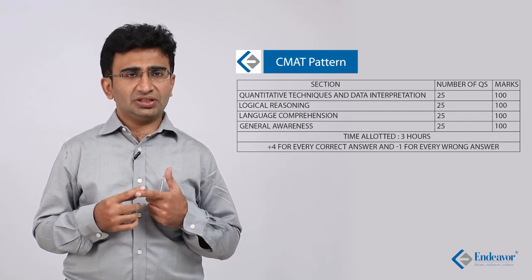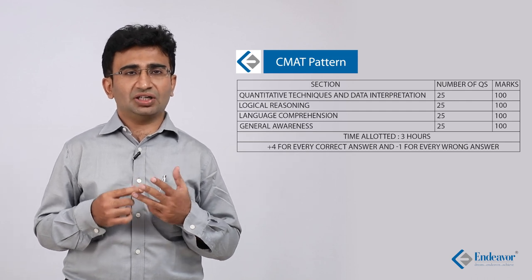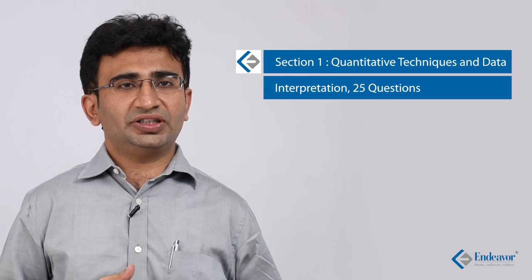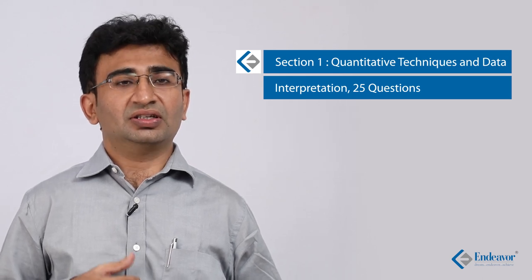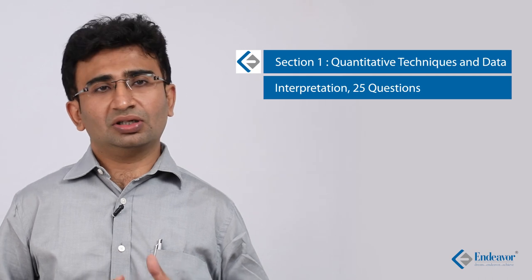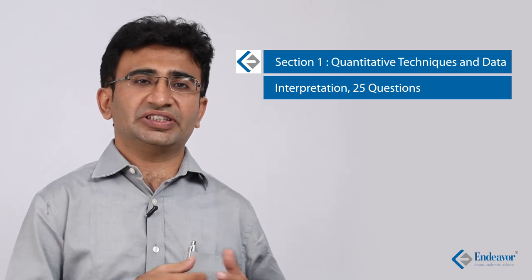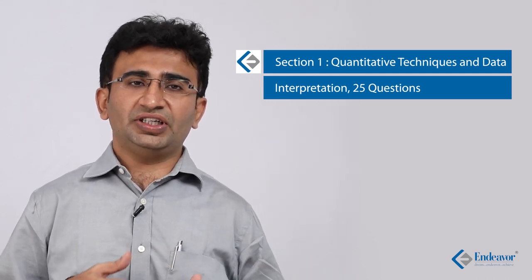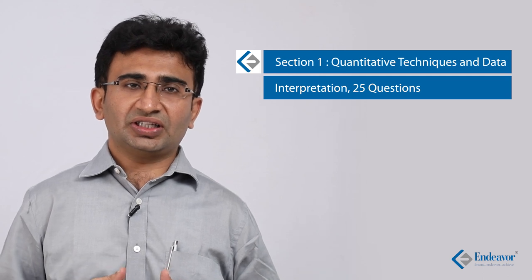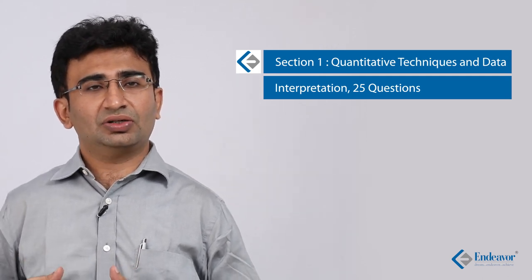The four sections are: Quantitative Techniques and Data Interpretation, Logical Reasoning, Language Comprehension, and General Awareness. CMAT has been following a pattern wherein one of the three major sections turns out to be slightly tougher. In 2015 and 2016, the section that was on the difficult side was Quantitative Techniques and Data Interpretation.